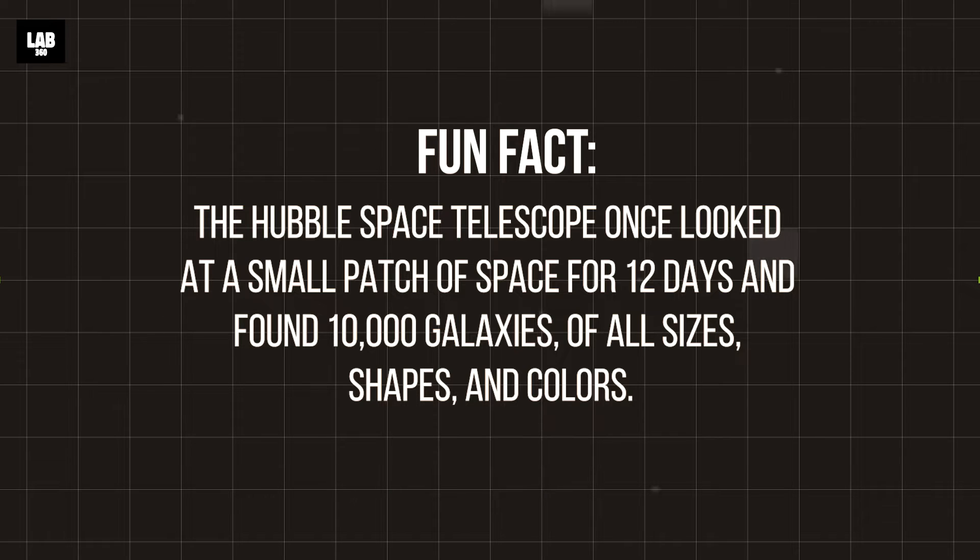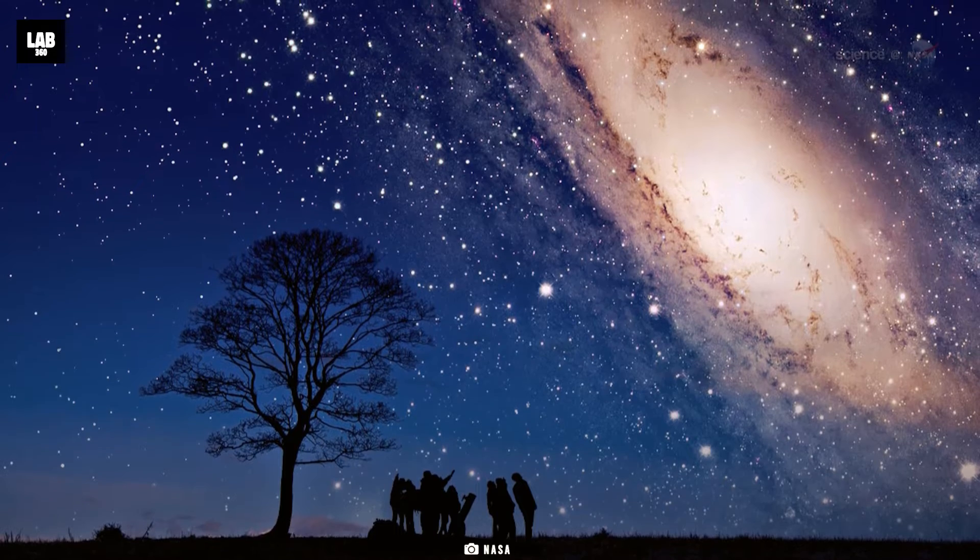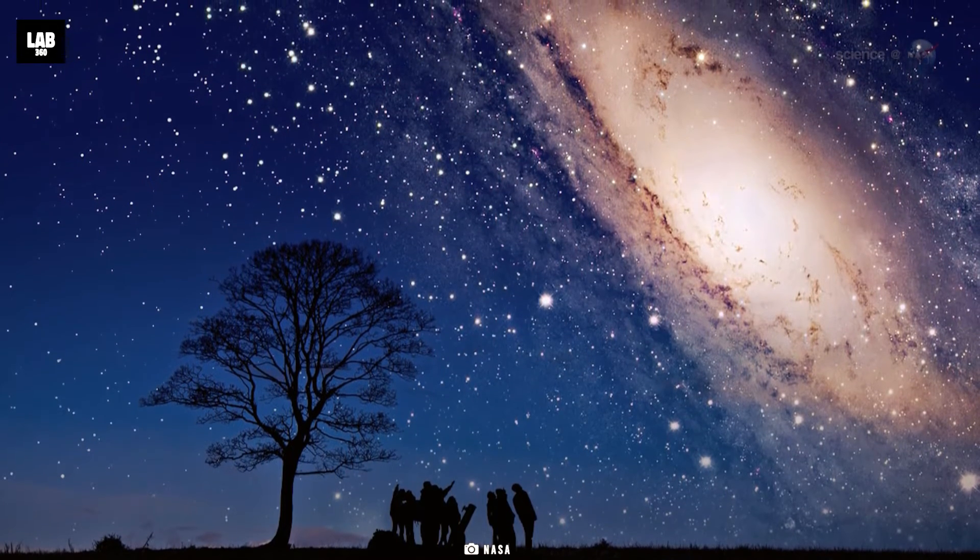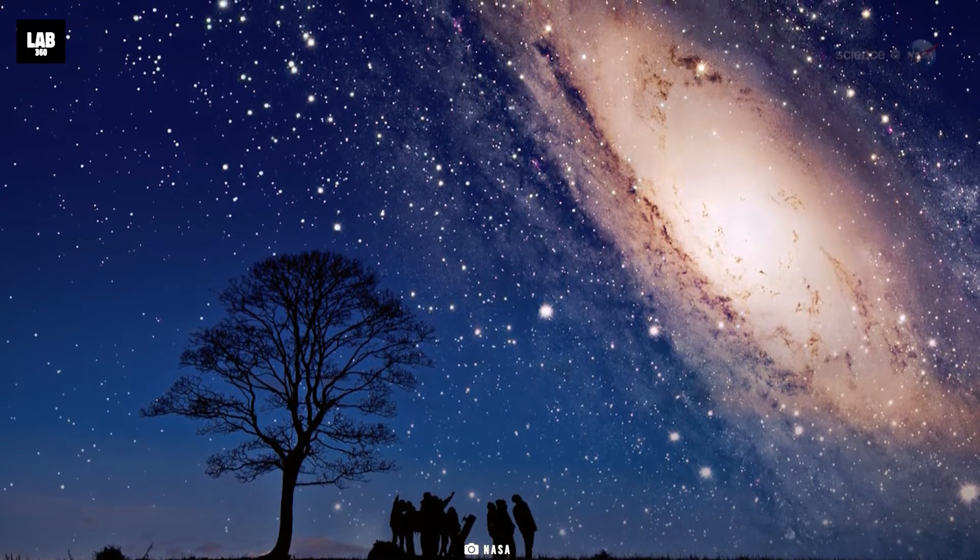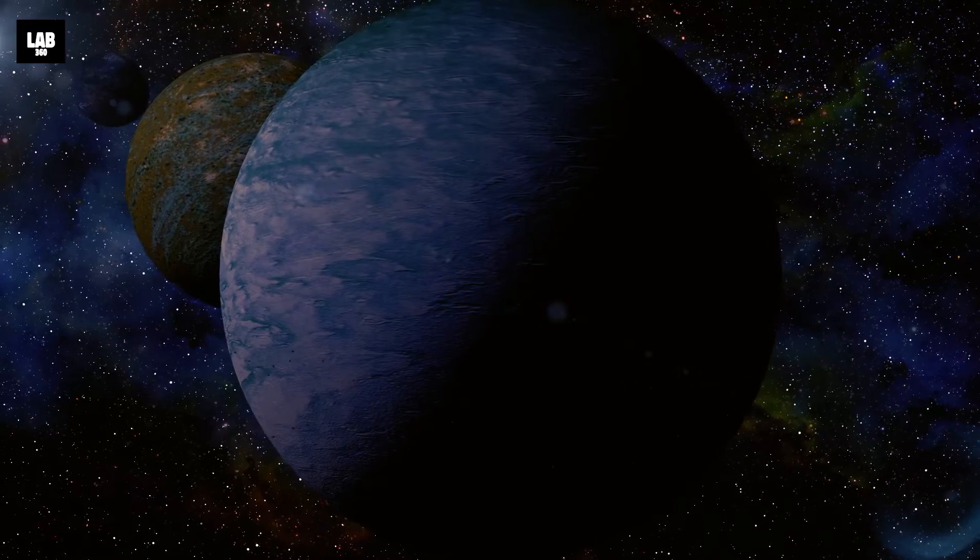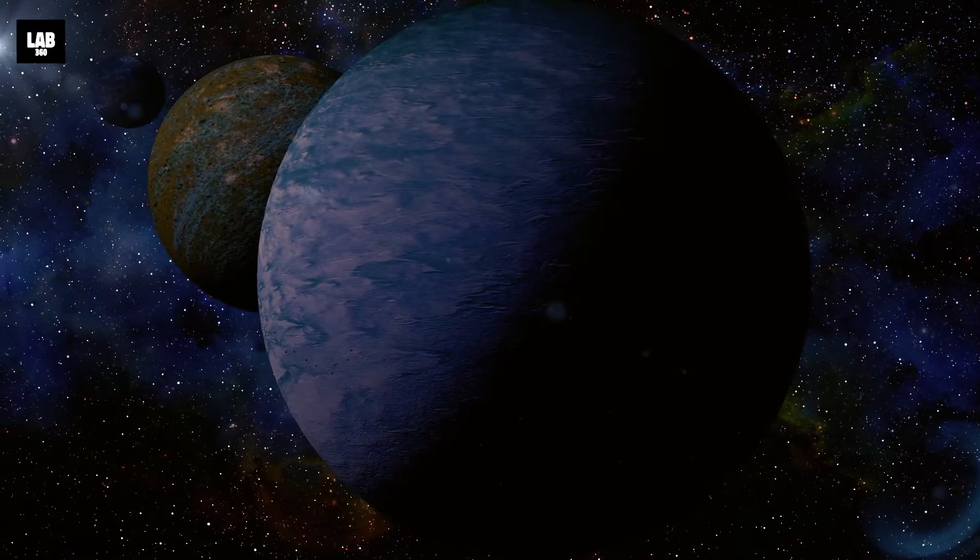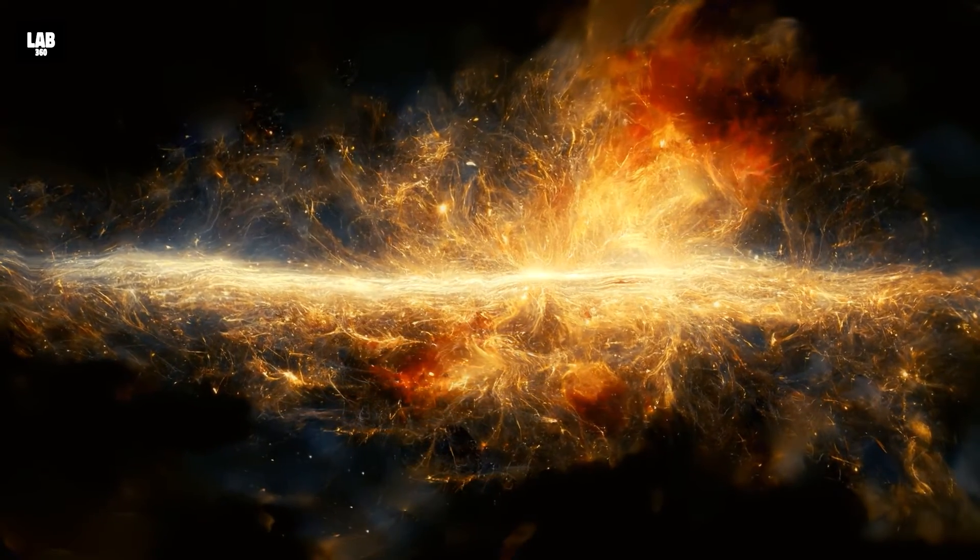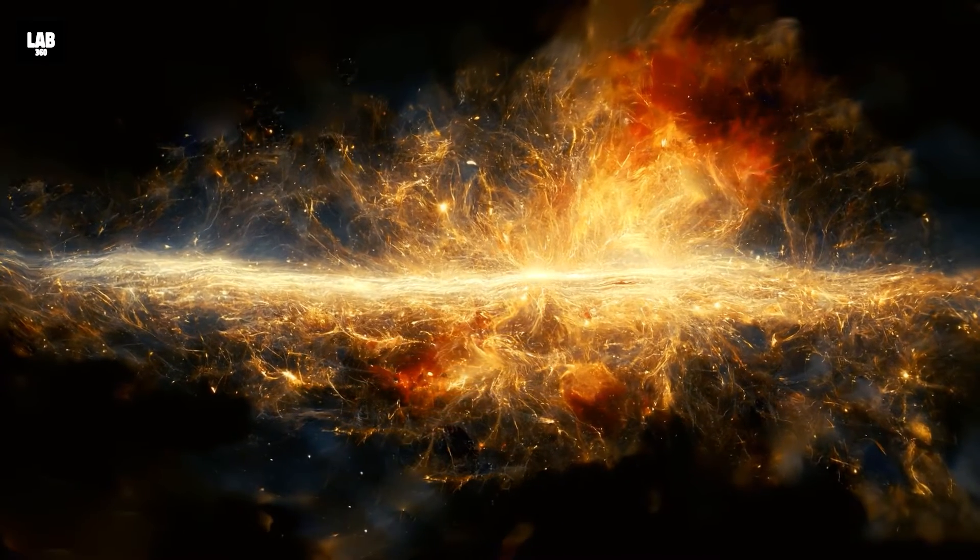The closest galactic neighbor to our Milky Way is the Andromeda galaxy, which has confirmed the presence of many exoplanets. This barred spiral galaxy is approximately 2.5 million light years from Earth.